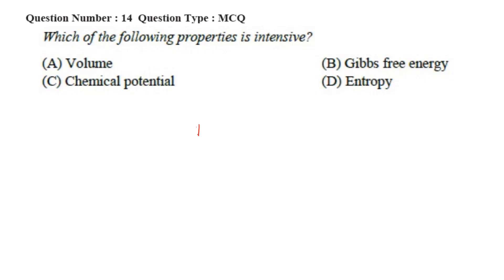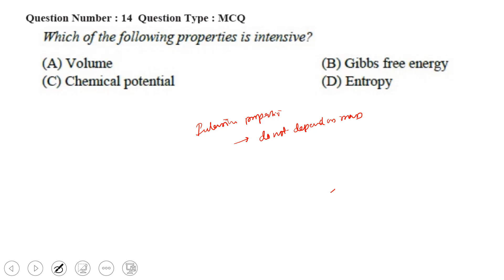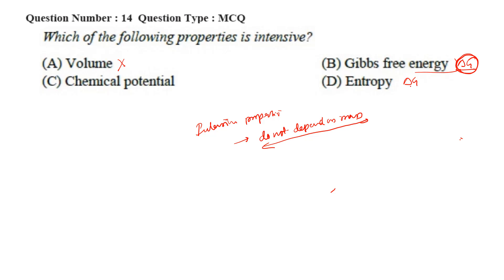Intensive properties are those properties which do not depend on mass — they are independent of mass. Volume is dependent on mass, so volume is not the correct answer. Gibbs free energy ΔG is also dependent on mass, as are entropy ΔS and enthalpy. But chemical potential is independent of mass, so the correct option is option C. Chemical potential is ΔG/Δx — it is the change of free energy with respect to moles — making it an intensive property.